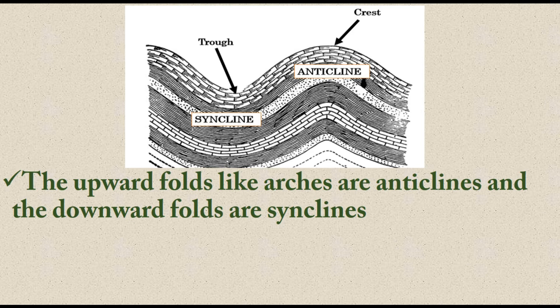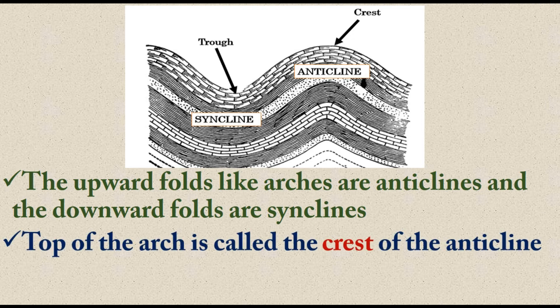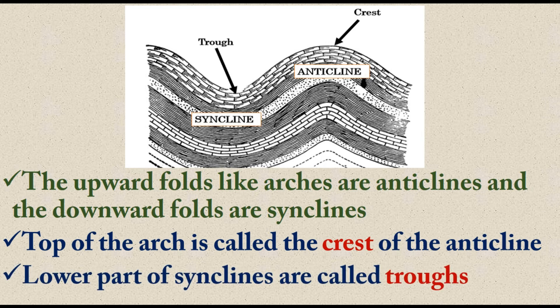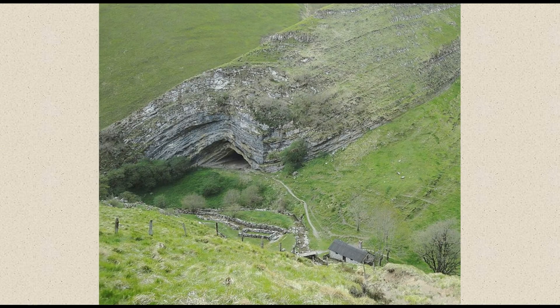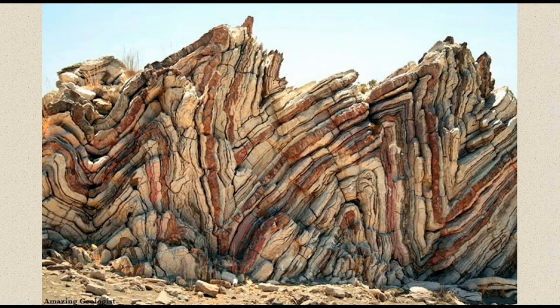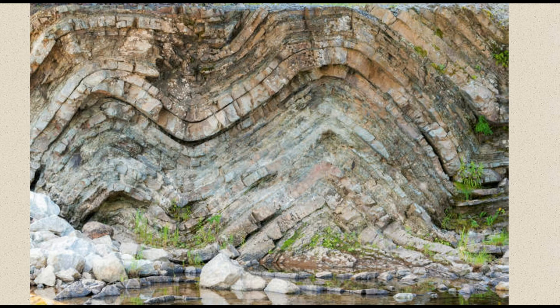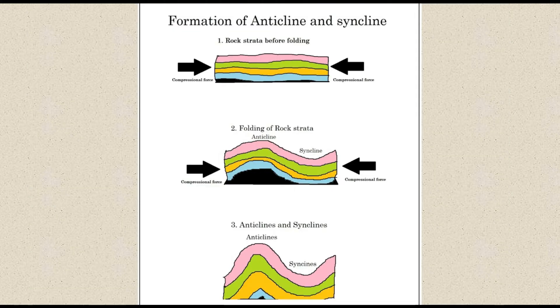The topmost part of an anticline is called the crest, and the lowermost part of a syncline is called the trough. Upward folds like arches are anticlines and downward folds are synclines. Here are some photos showing anticlines and synclines — here is a large mountain that is completely folded upward due to compression, and here you can clearly see an anticline and a syncline in the middle.